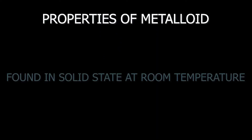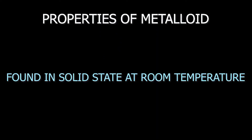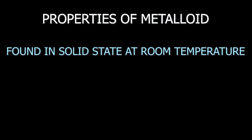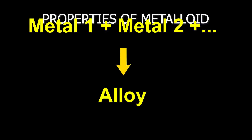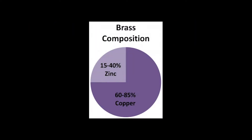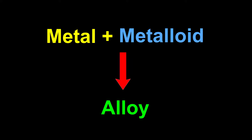All the metalloids are found in solid state at room temperature. Alloys are a type of matter formed by mixing two or more metals together. For example, brass is an alloy made from copper and zinc. Similar to metals, metalloids can form alloys with other metals.